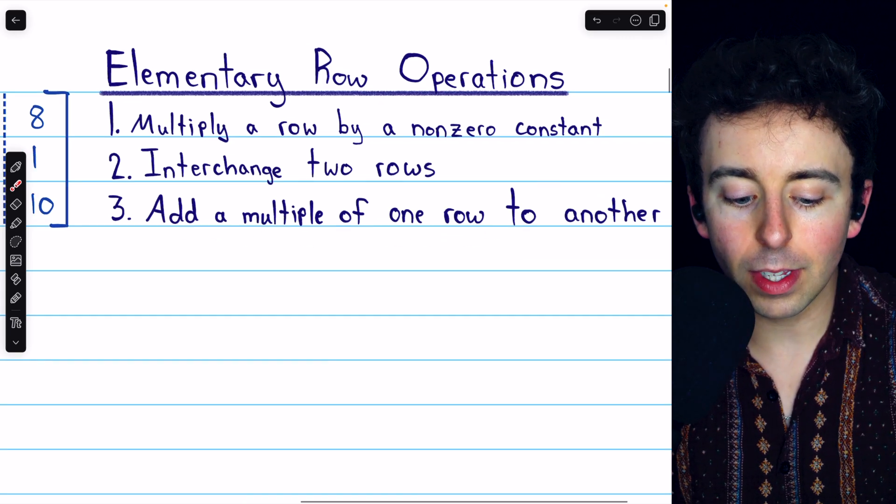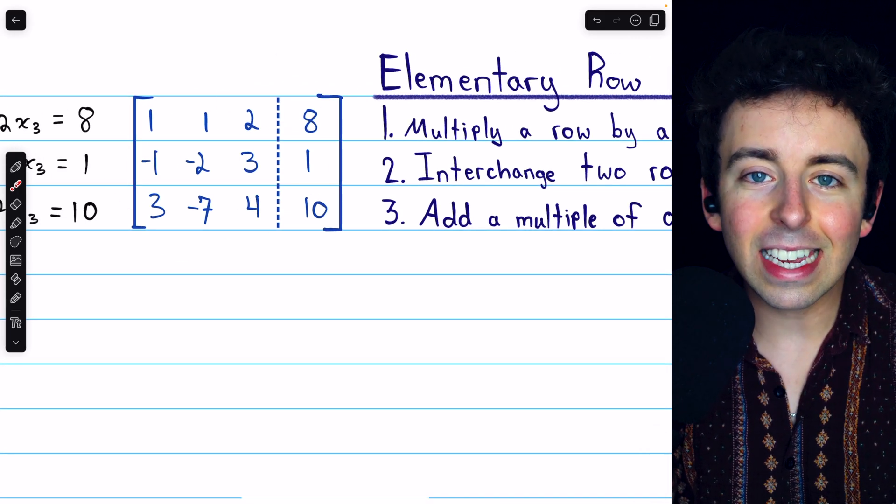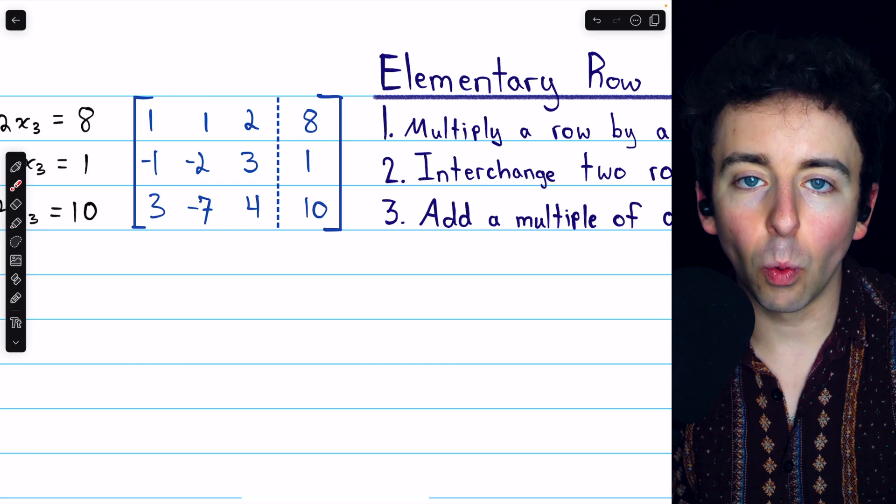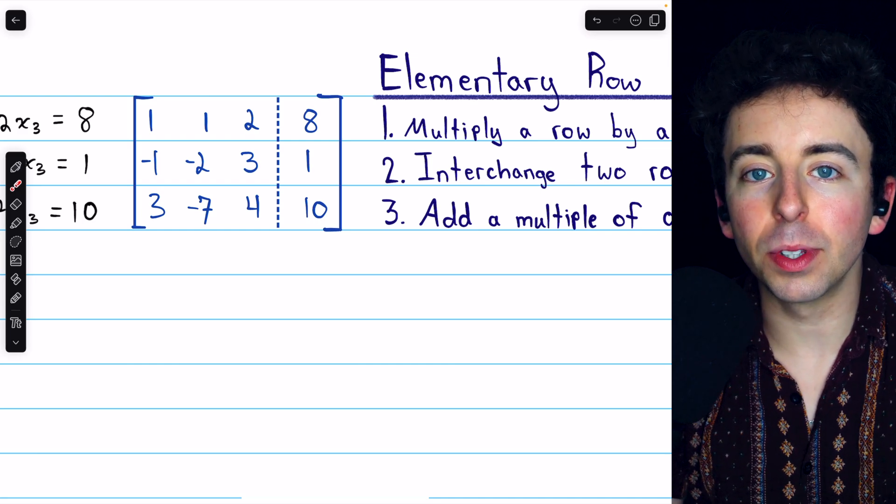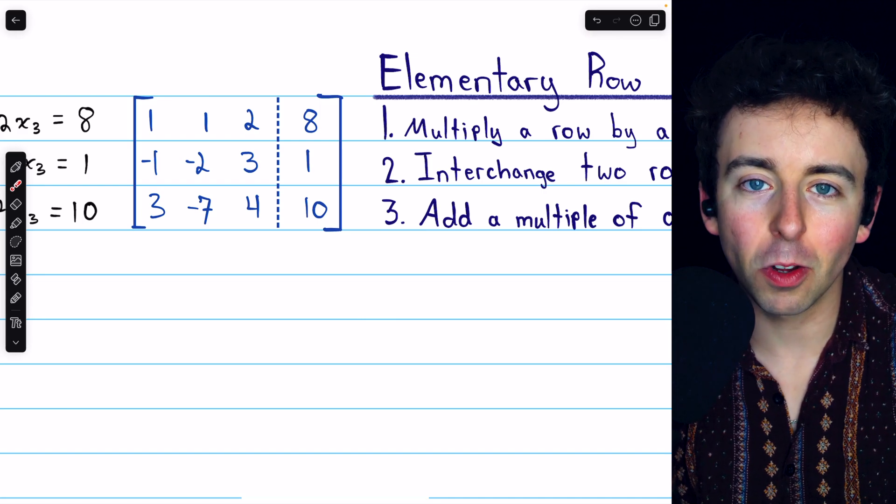So we're going to perform these operations on this augmented matrix until each non-zero row has a leading 1. Then we'll be able to use back substitution to finish solving the system. Let me show you what I mean.